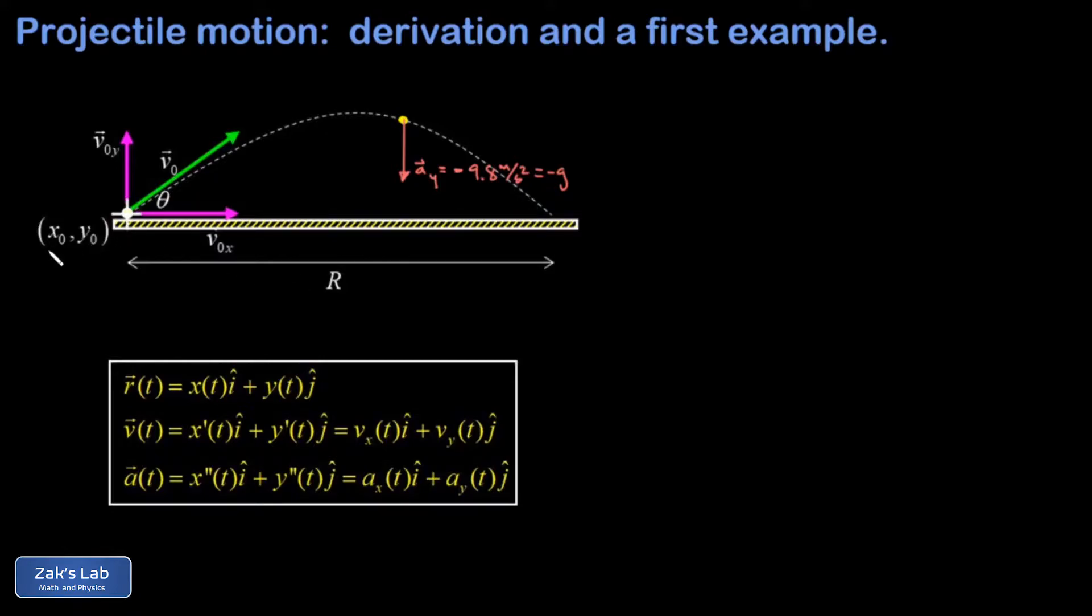You'll notice that we're also given the initial position of the projectile, x naught, y naught, and we're given the initial velocity of the projectile, and that's already been broken into its velocity components, the initial x and y velocity. Now given those initial conditions, and the fact that the acceleration is negative g in the y direction, our goal here is to describe the position and velocity of this projectile at any moment in time, at which point we can solve any conceivable problem with a projectile in it.